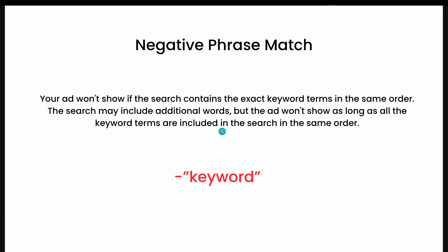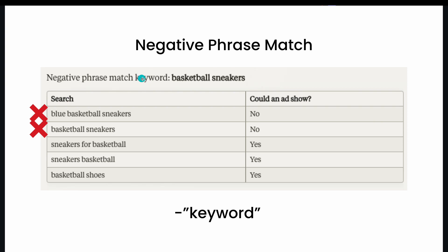That's different from negative phrase match, which you can identify by the minus sign followed by quotation marks at the beginning and end. With negative phrase match, your ad won't show if the search contains the exact keyword terms in the same order — there can be additional words, but the ad won't show as long as those keyword terms are included in that same order. For example, with negative phrase match for 'basketball sneakers,' 'blue basketball sneakers' would not show because 'basketball sneakers' appears in order. However, 'sneakers for basketball' or 'sneakers basketball' could still show since the order is switched. 'Basketball shoes' could also still show since 'shoes' differs from 'sneakers.'